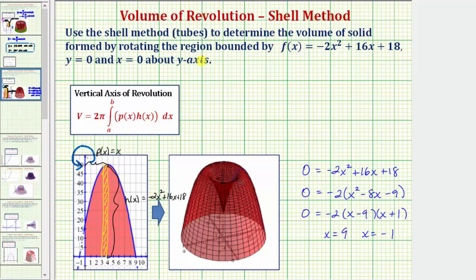So using the shell method, the volume v is equal to 2 pi times the integral. Again, the limits of integration are going to be from 0 to 9 along the x-axis of the bounded region. The integrand function is rho of x times h of x, which we now know is x times the quantity negative 2x squared plus 16x plus 18 integrated with respect to x.